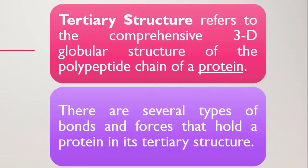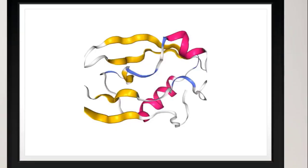Next, we have tertiary structure. The polypeptide chain keeps on bending and folding upon itself, forming a three-dimensional globular structure. That is the tertiary structure of proteins. The tertiary structure can be maintained by many types of forces.